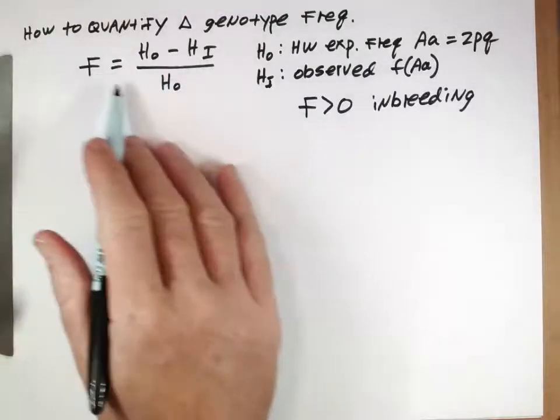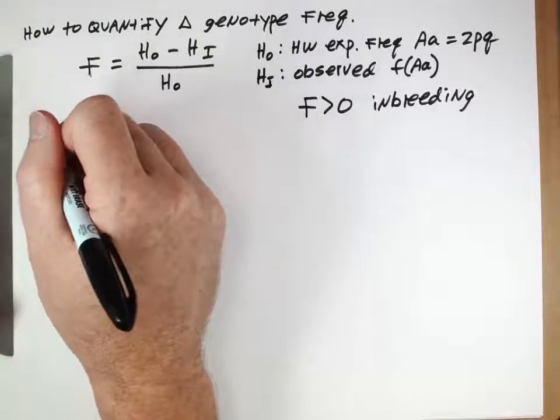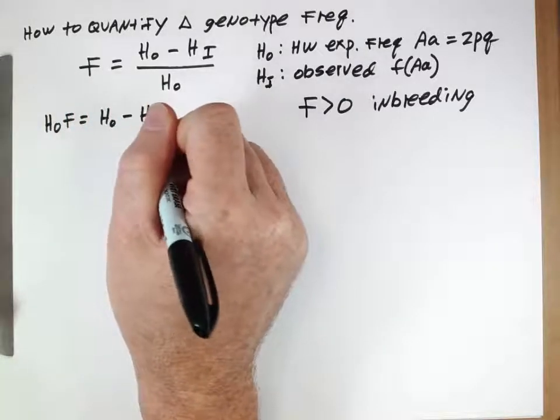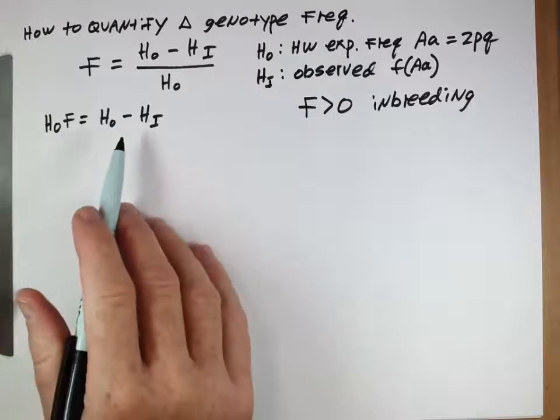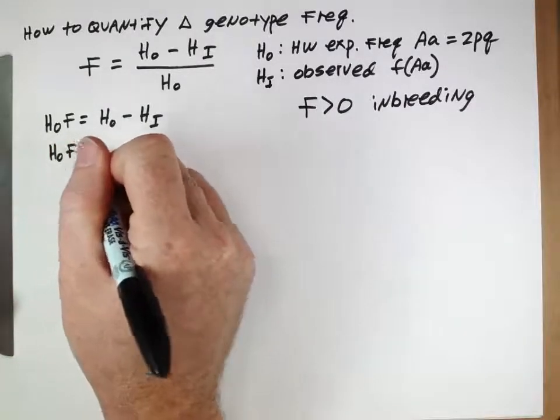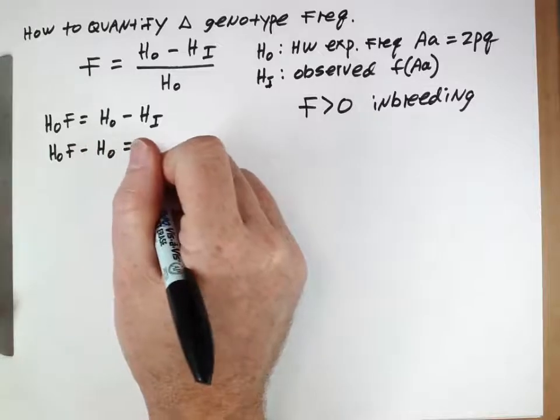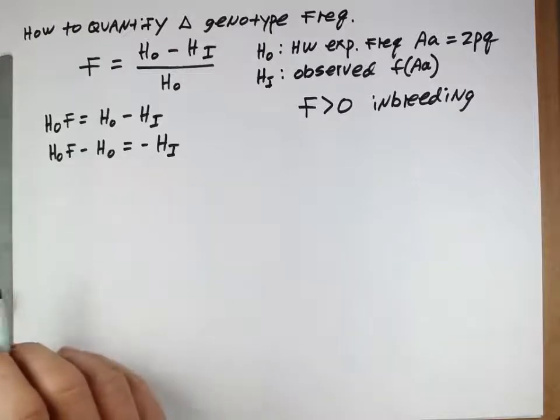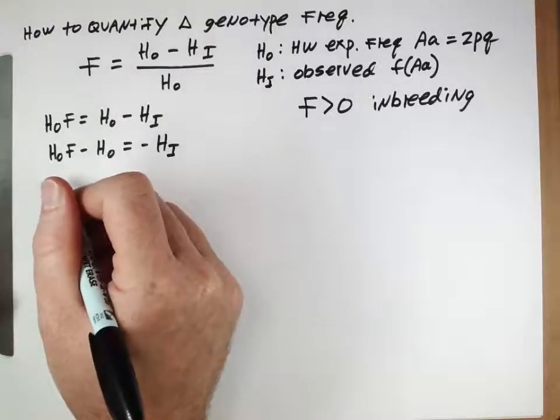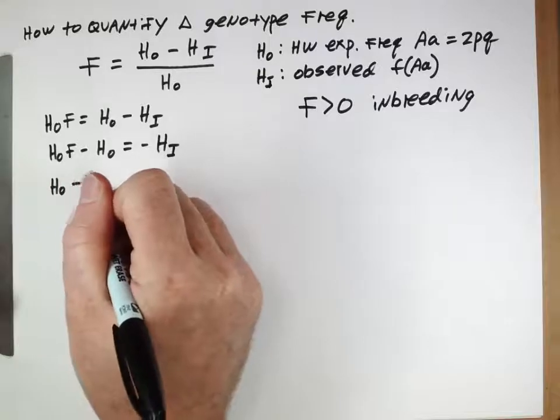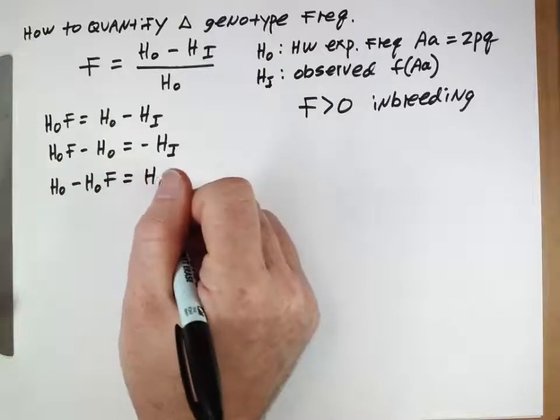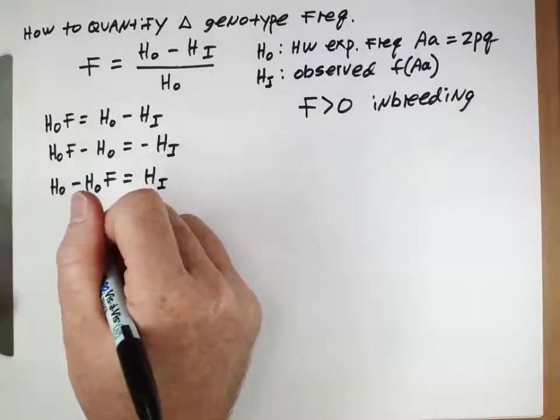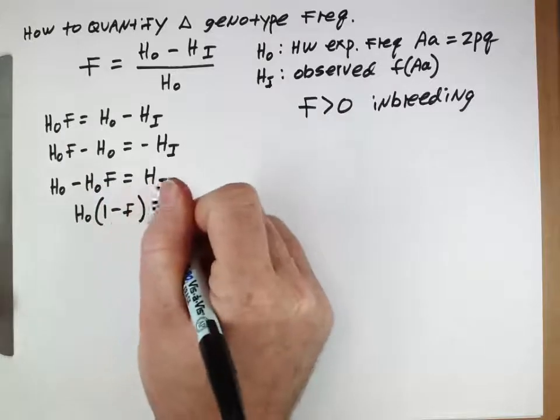So now let's take this equation and work with it a little bit. Let's multiply both sides by HO, so we have HOF equals HO minus HI. Then we subtract HO from both sides. HOF minus HO equals negative HI. We have too many negatives, so let's multiply both sides by negative 1. That gives us HO minus HOF equals HI. And then we have an HO in both terms there. HO times (1 minus F) equals HI.